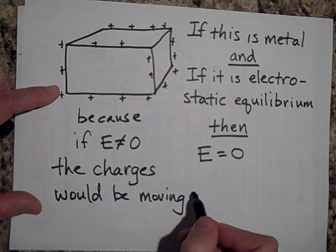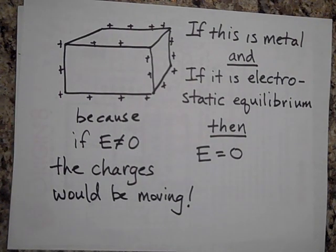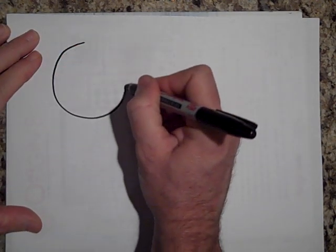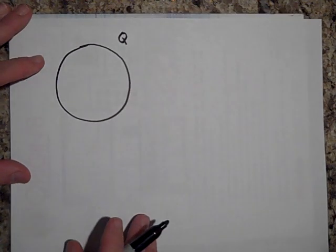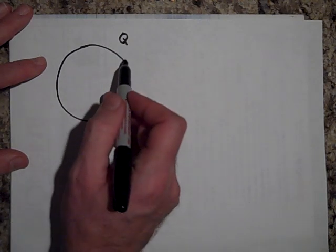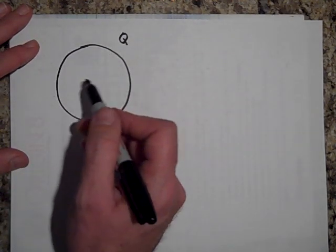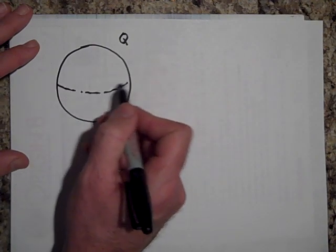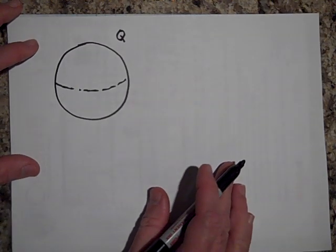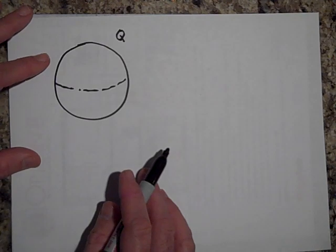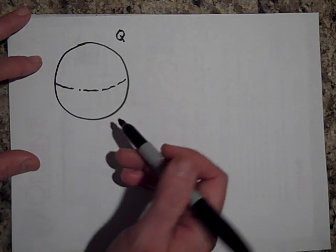If the charges are moving, then that's not electrostatic equilibrium. So let's take a metal sphere and charge it up. I want to convince you that the charges are going to all hang out on the edges. This is a solid metal sphere — not a hollow one, a big chunk of metal — but when you charge it, the charges will all end up on the surface. The reason I'll give you is Gauss's law.